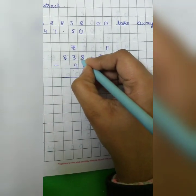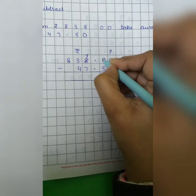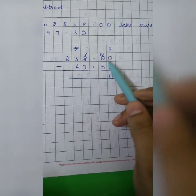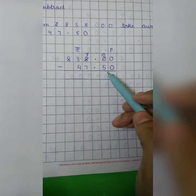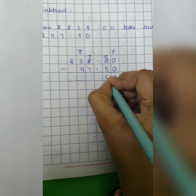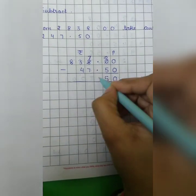So this 0 will borrow 1 from this 8. 8 will become 7 and 0 will become 10. Now we can do the subtraction. 10 minus 5. 10 minus 5 will give you 5. So here we have 50 paise.